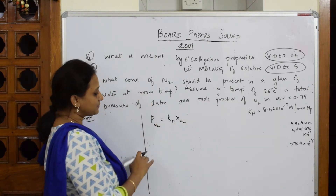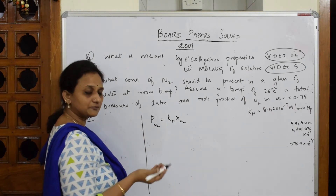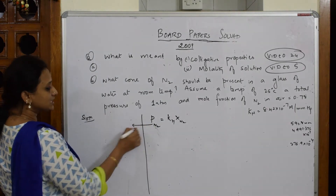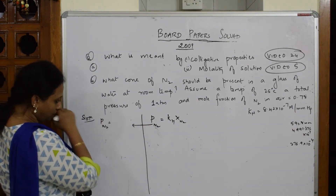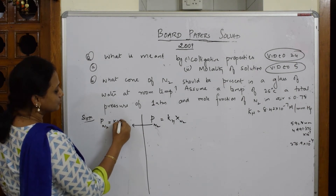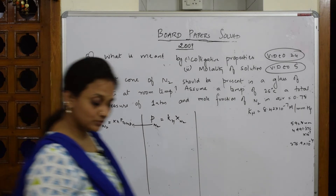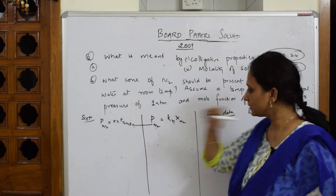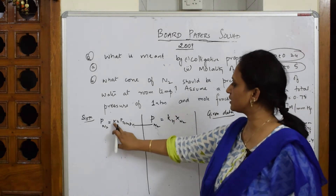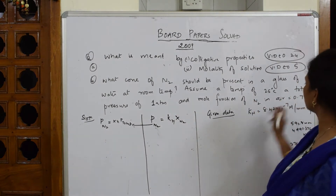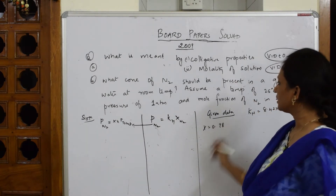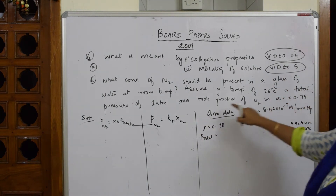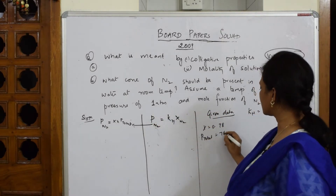We will write this for nitrogen. Now, PN₂ is also related by another formula: PN₂ = X × P_total, which is given to us. So substituting the given data: X is given as 0.78, and P_total that is assumed to be 1 atmosphere, which is nothing but 760 mm of mercury.